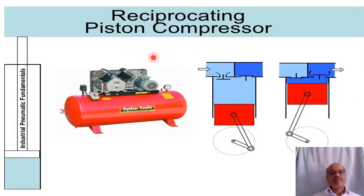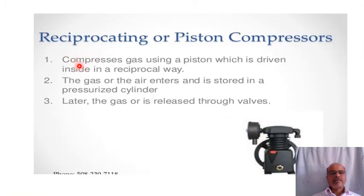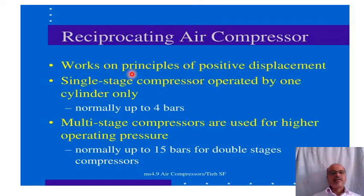The reciprocating piston compressor is shown diagrammatically. It compresses gas or air using a piston driven in a reciprocating way. The gas or air enters and is stored in a pressurized cylinder, then released through valves. It works on the principle of positive displacement. Single-stage compressors operate with one cylinder, normally up to four bars. Multi-stage compressors are used for higher operating pressures, normally up to 15 bars for double-stage compressors.